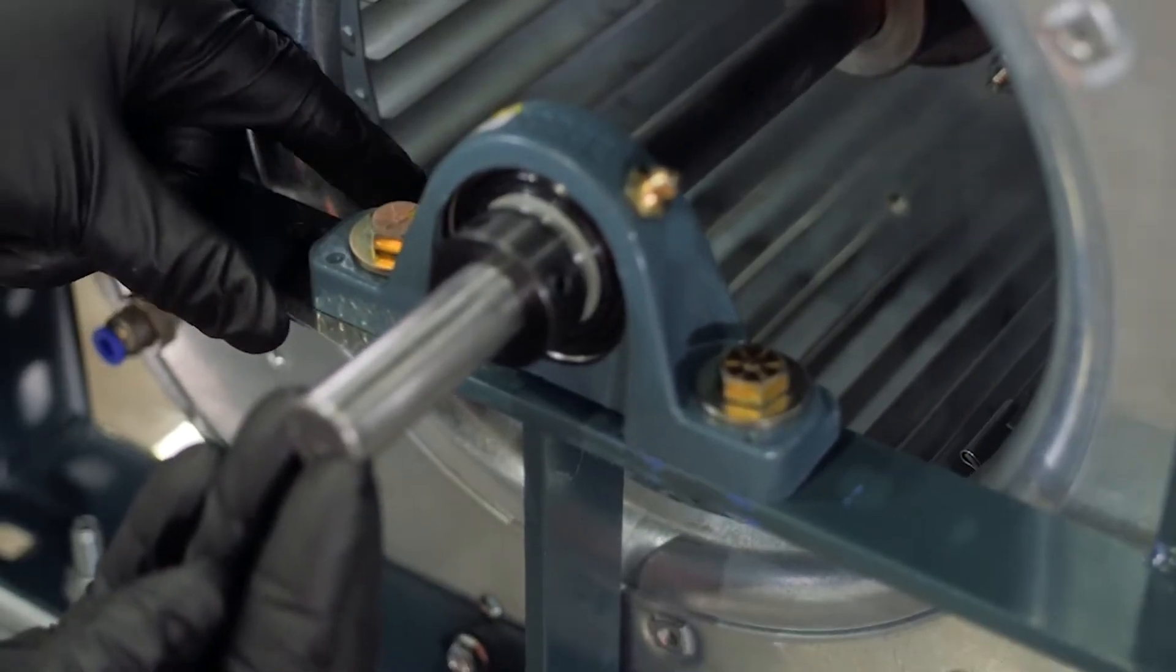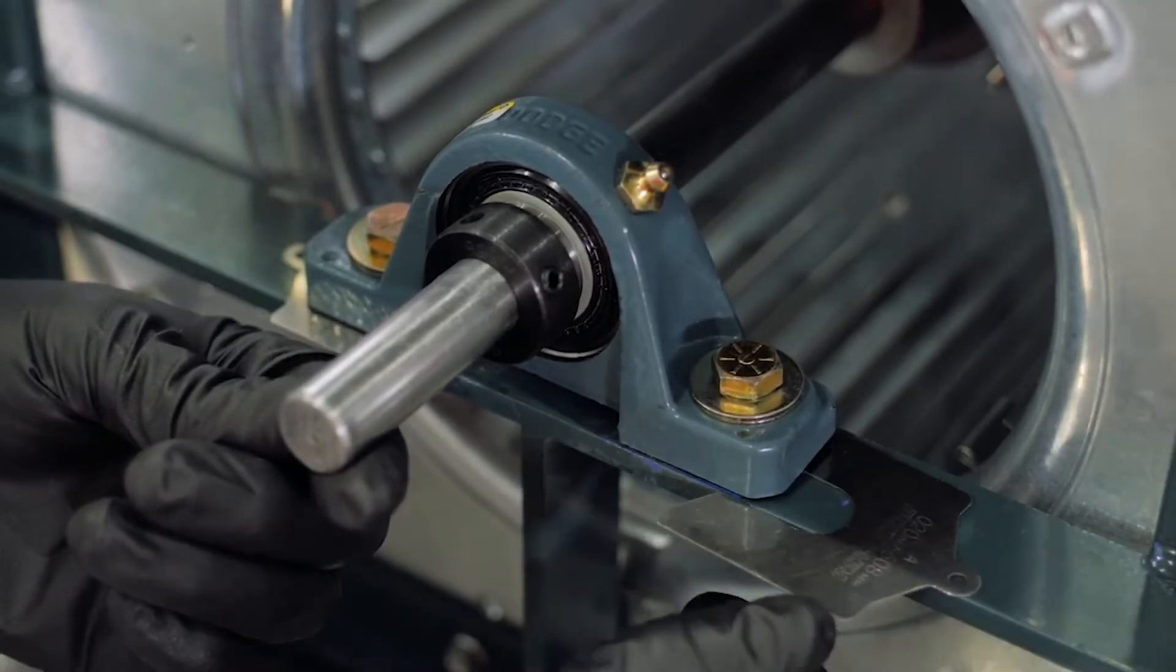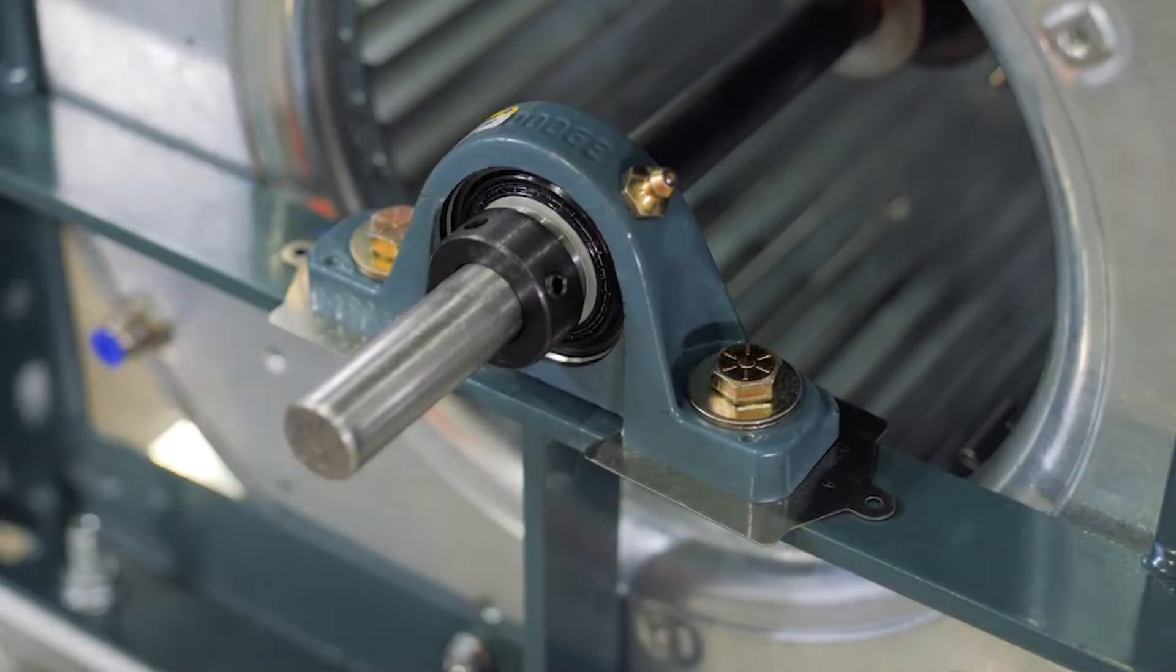Shimming of the housing may be necessary for alignment or to ensure the mounting surface is flat. To prevent distortion of the housing, shims should cover the entire contact area between the housing and mounting surface.